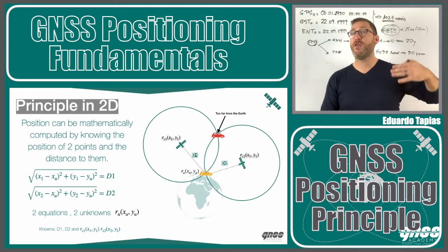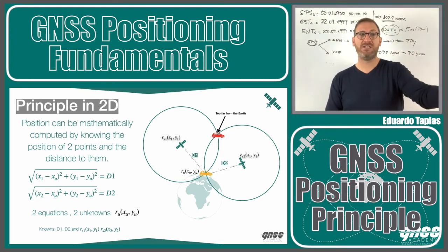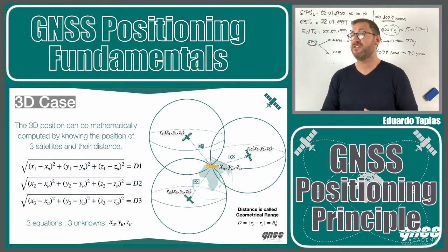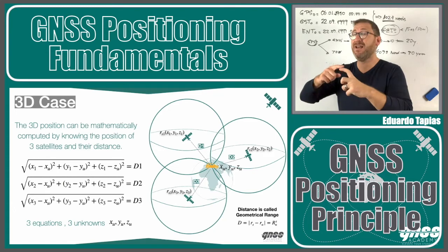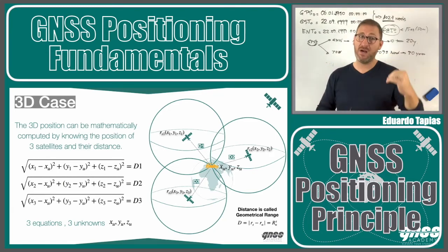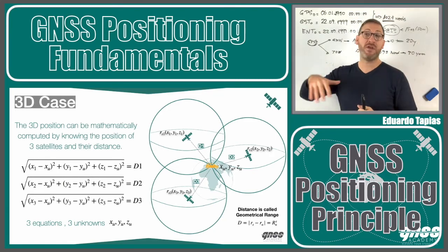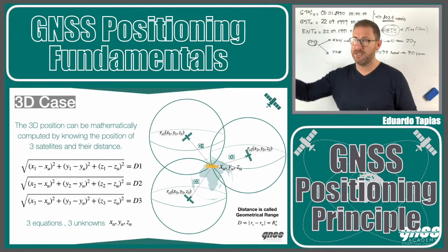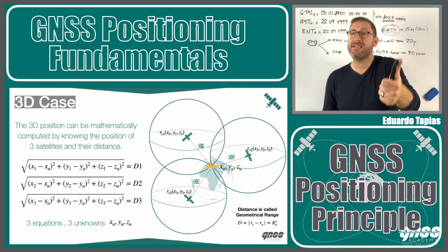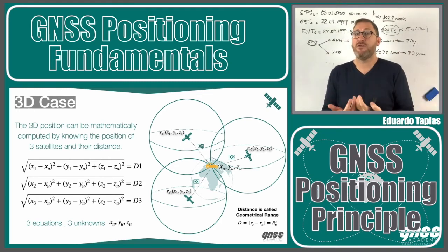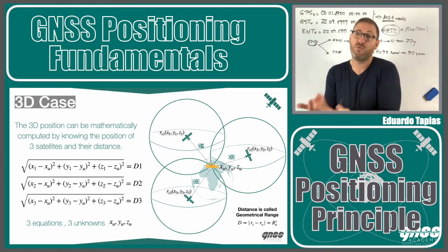In the 3D case, instead of circles we have spheres. The intersection of three spheres still gives two points — one close to the Earth and one far from it — but the principle is exactly the same. We end up with three equations and three unknowns. To solve this system, we need to know the distance to the satellites and the positions of the satellites.